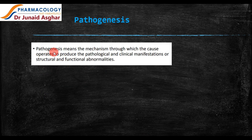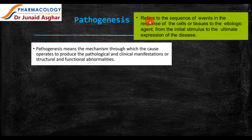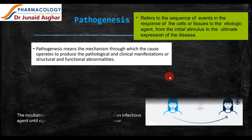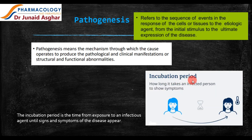Pathogenesis means the mechanism through which the cause or etiology operates to produce the pathological and clinical manifestations — the structural and functional abnormalities. Pathogenesis refers to the sequence of events in the response of cells or tissues to the etiological agent, from the initial stimulus to the ultimate expression of the disease. It also includes the study of the incubation period, which is the time from exposure to an infectious agent until signs and symptoms of the disease appear.